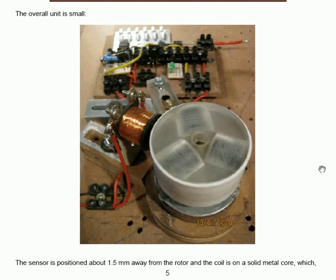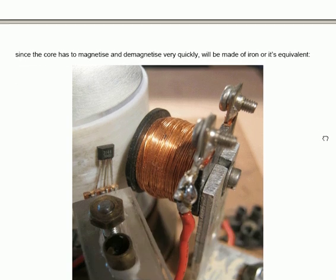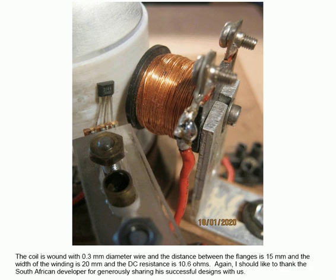The overall unit is actually very small. This is only 50mm across here, so you can see that the entire unit is actually very small. The sensor in this particular arrangement is about 1.5mm away from the rotor and the coil is on a solid metal core which, since the core has to magnetize and demagnetize very quickly, that core will be made of iron or its equivalent. Zinc plated iron bolts are readily available and they work very well and do not hold their magnetism, unlike steel. If you use mild steel for the core, it will become permanently magnetized very quickly, in fact almost instantly.